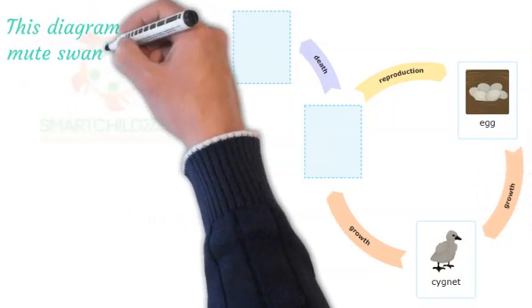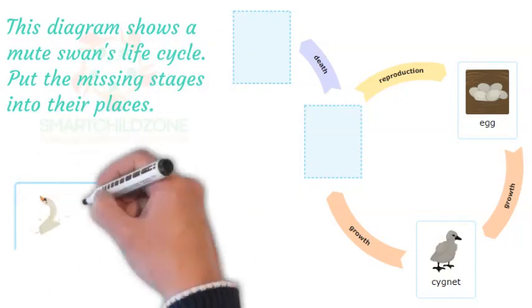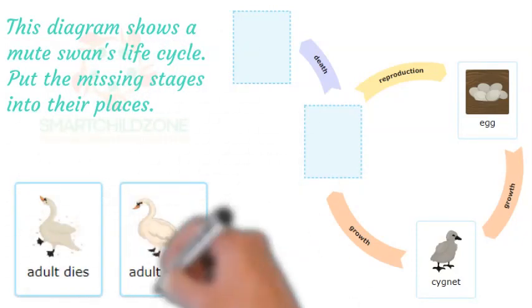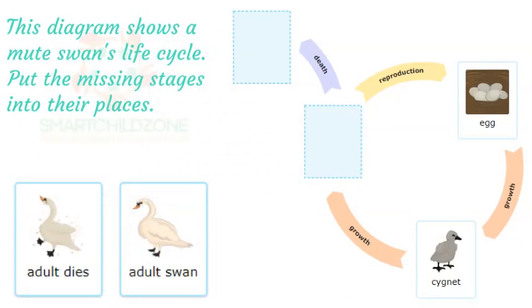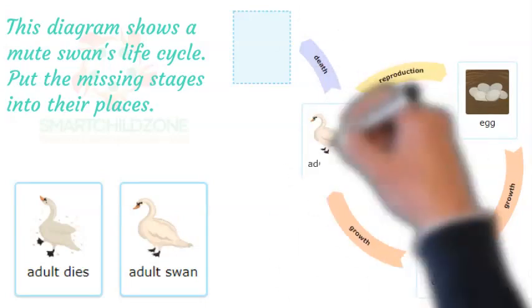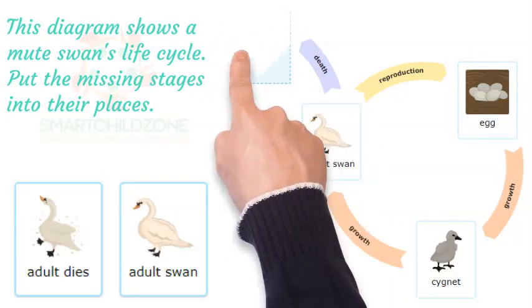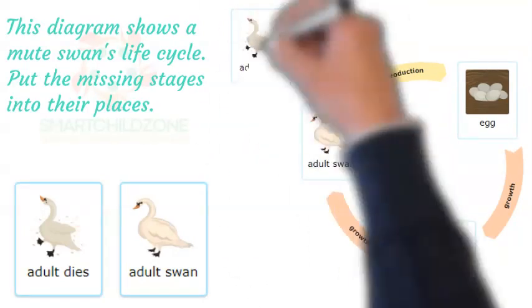This diagram shows a mute swan's life cycle. Put the missing stages into their places. The adult swan stage comes after the cygnet stage. The adult dies stage comes after the death arrow.